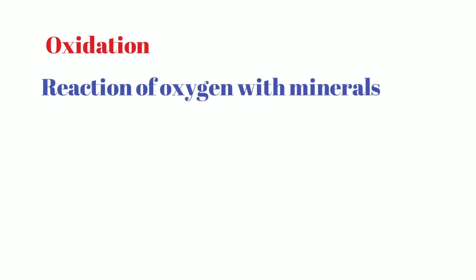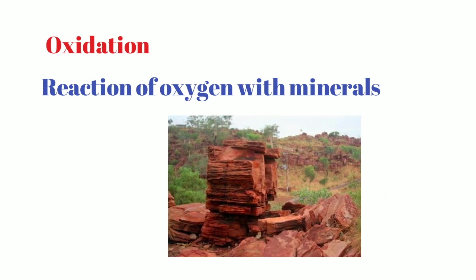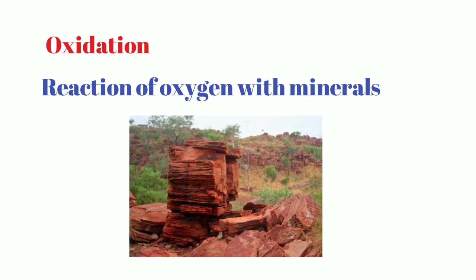Now let's look at oxidation. Oxidation is the reaction of oxygen with minerals inside rocks. For example, rocks contain iron which reacts with oxygen and water to form iron oxide. A brown crust or rust can be seen on some rocks. These oxidized rocks crumble easily, and erosion removes them quickly from the surface, exposing fresh rock below.